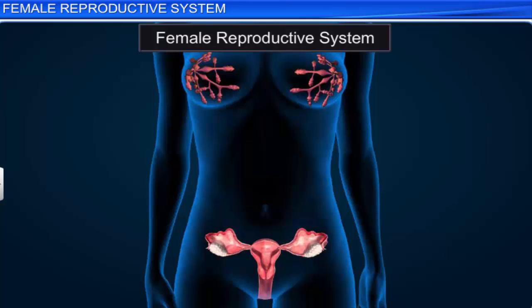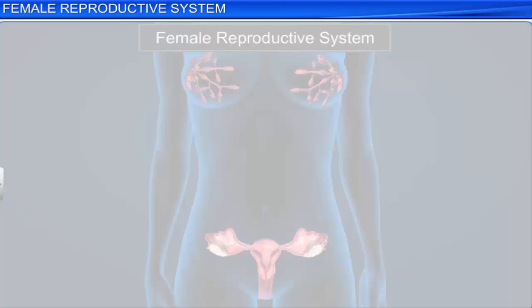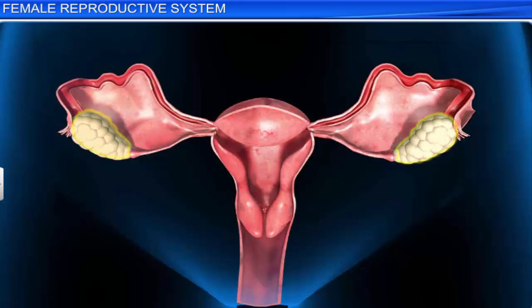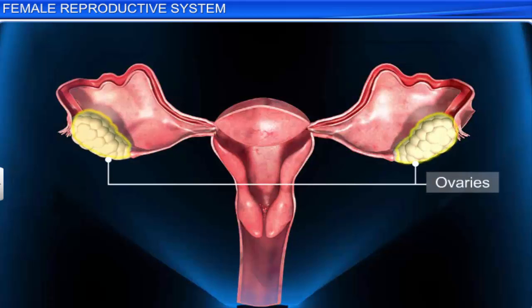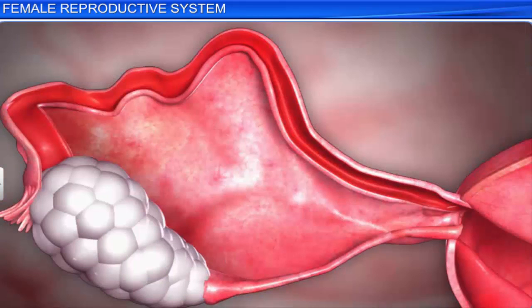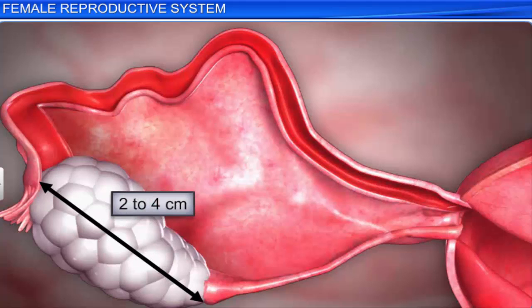Let us study each organ in detail. The female reproductive system includes a pair of ovaries, located one on each side of the lower abdomen. They are the primary sex organs, as they produce the ovum, or the female gamete. Each ovary is about 2 to 4 centimeters in length. They are connected to the pelvic wall and the uterus by ligaments called mesovarium.